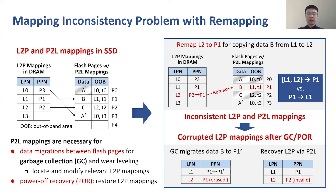However, remappings modify the L2P mappings, but the corresponding P2L mappings remain unchanged on flash. As shown in the right figures, after remapping L2 to P1, both L1 and L2 point to P1, but the reverse mapping includes only L1. Then, during GC or power-off recovery, L2P mappings could be modified or recovered wrongly because of stale and incorrect P2L mappings.